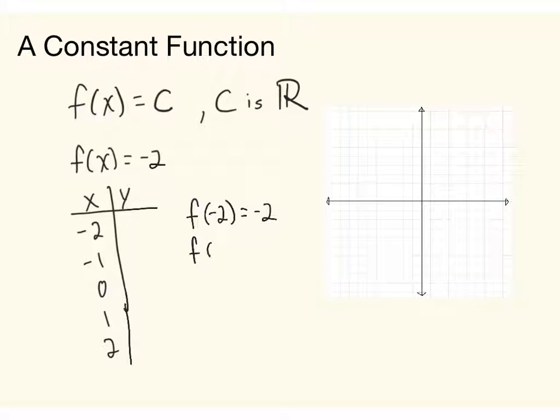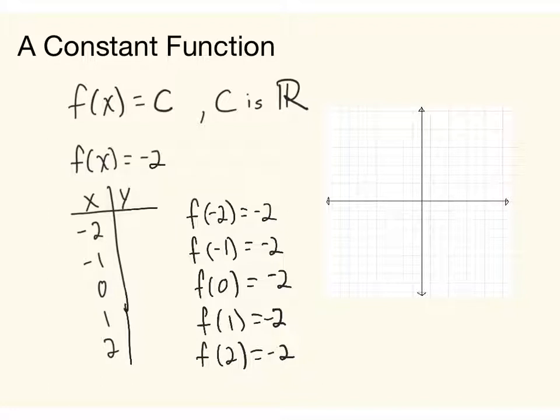Now if I do f of negative 1, we also get negative 2. F of 0 is negative 2, f of 1 is negative 2, and f of 2 is negative 2. So in this case, all of the outputs, there is a constant output of negative 2, no matter what we insert for X.